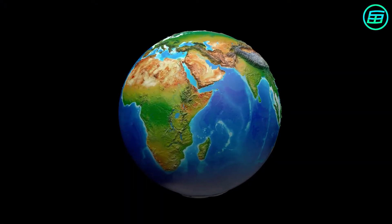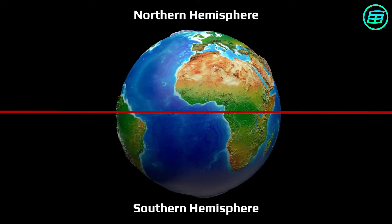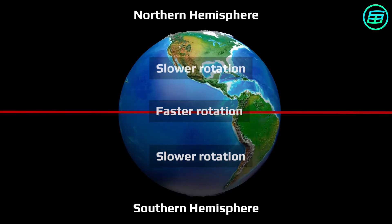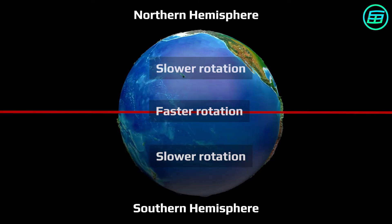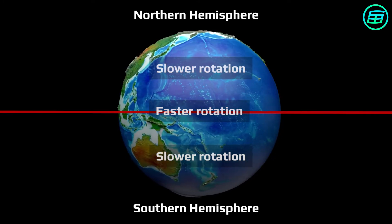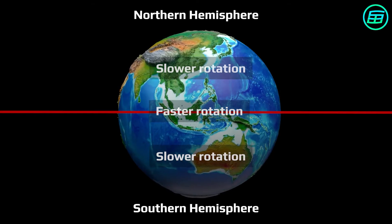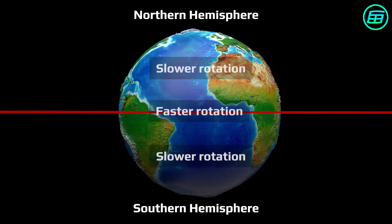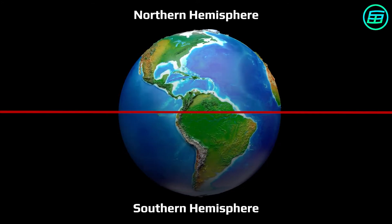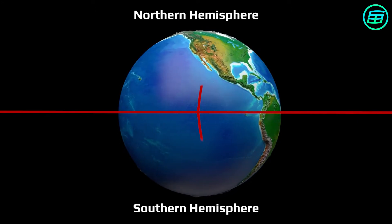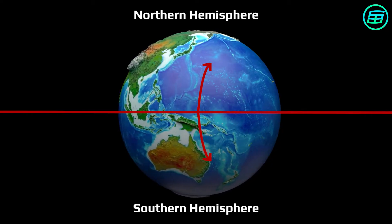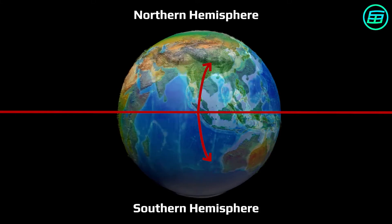A similar thing happens when you travel north or south from the equator on the spinning earth. Nature strives to maintain your eastward speed as you leave the large circle of the equator, equivalent to outstretched arms, and move to smaller orbits, equivalent to pulling your arms in. Consequently, all things heading away from the equator get a small eastward nudge, while objects moving toward the equator are pulled westward.